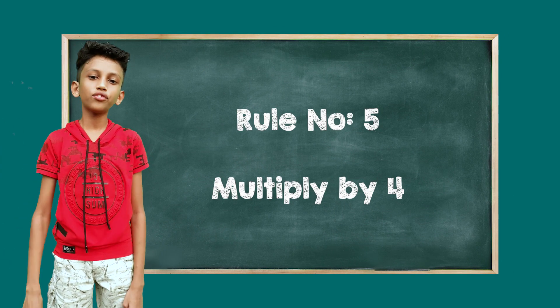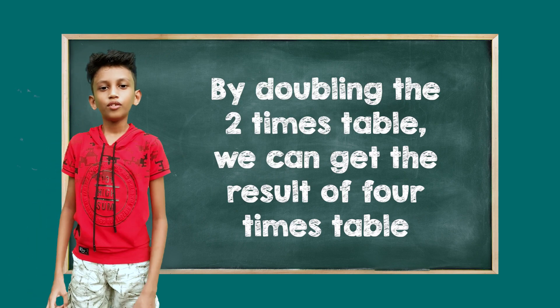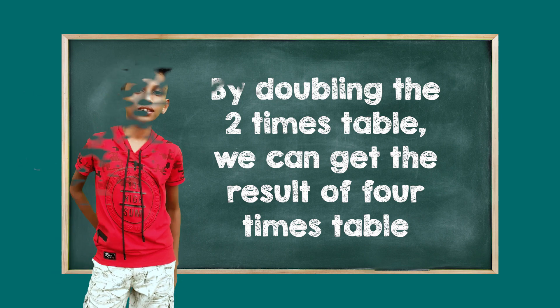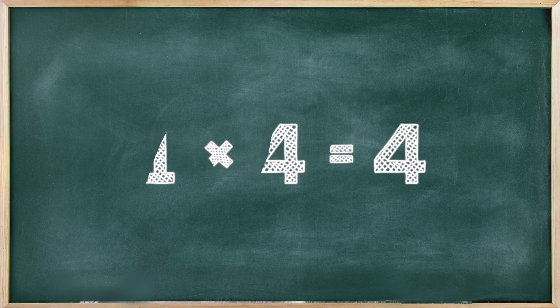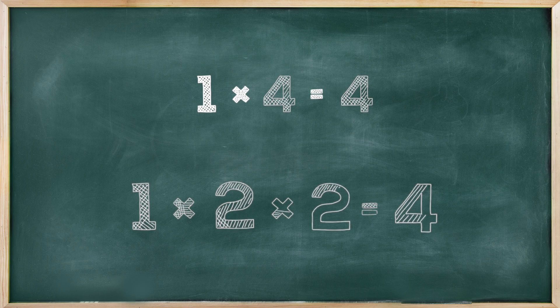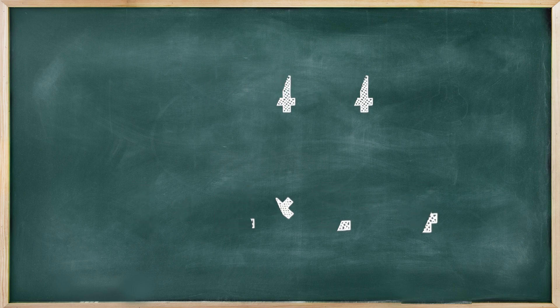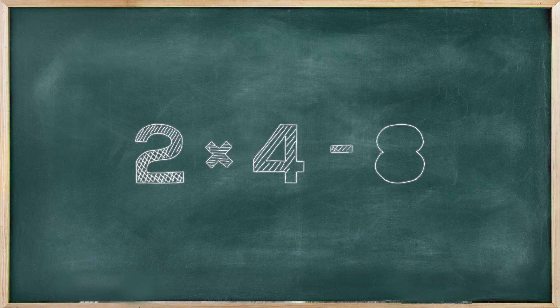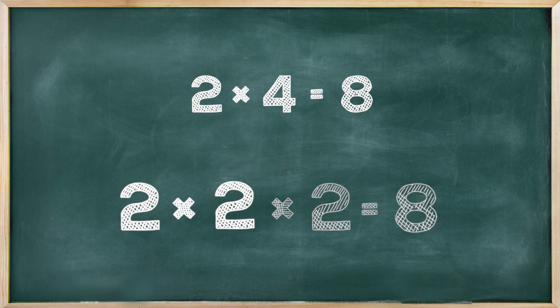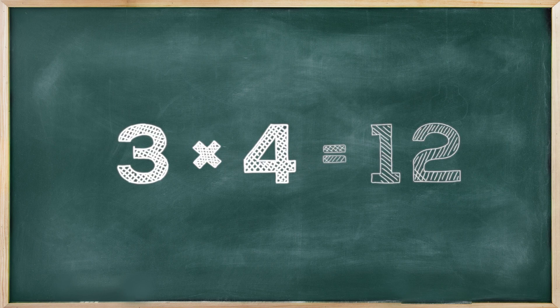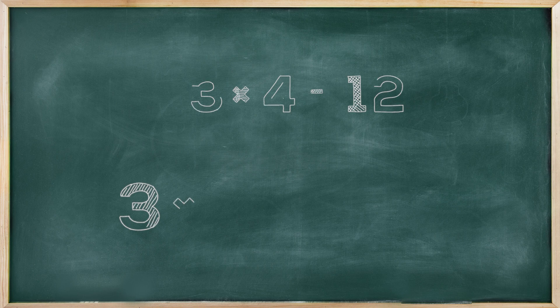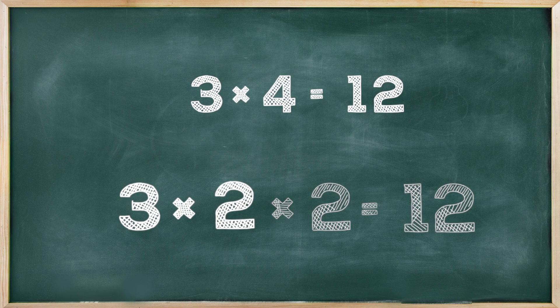Rule number 5: Multiplying by 4. By doubling the 2 times table, we can get the result of the 4 times table. 1 times 4 is 4 — that means by doubling 2, we will get 4. 2 times 4 is 8 — that means by doubling 4, we will get 8. 3 times 4 is 12 — that means by doubling 6, we will get 12. Like that, we can make the multiplication table of 4.